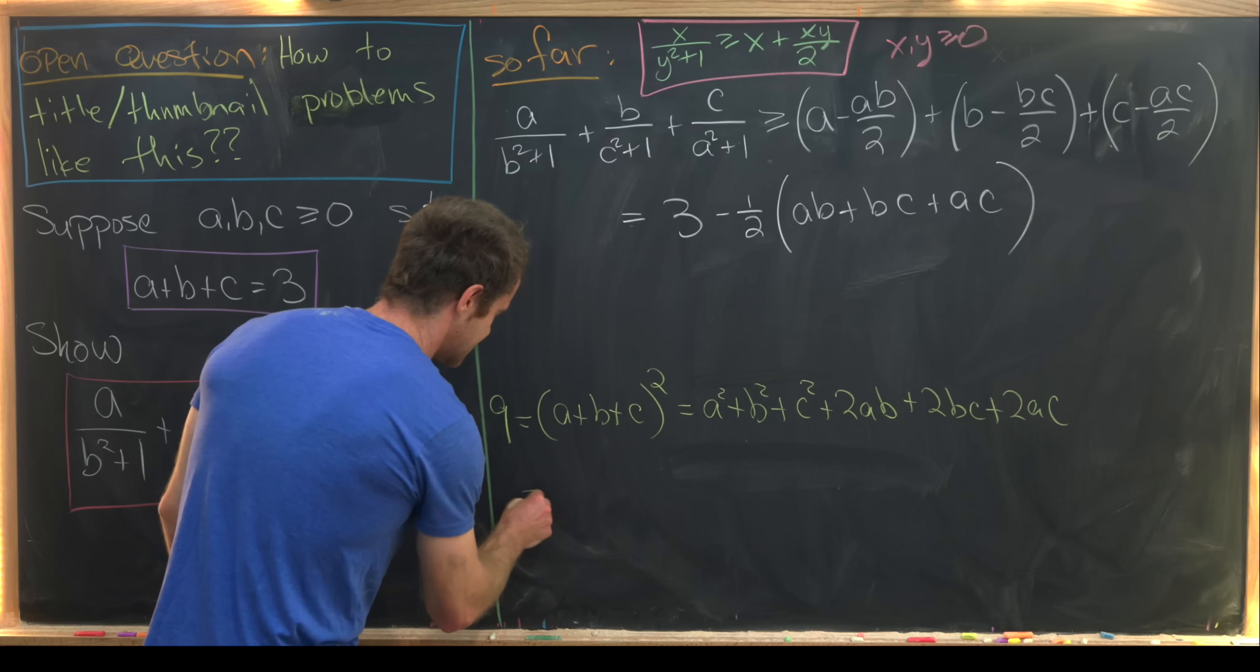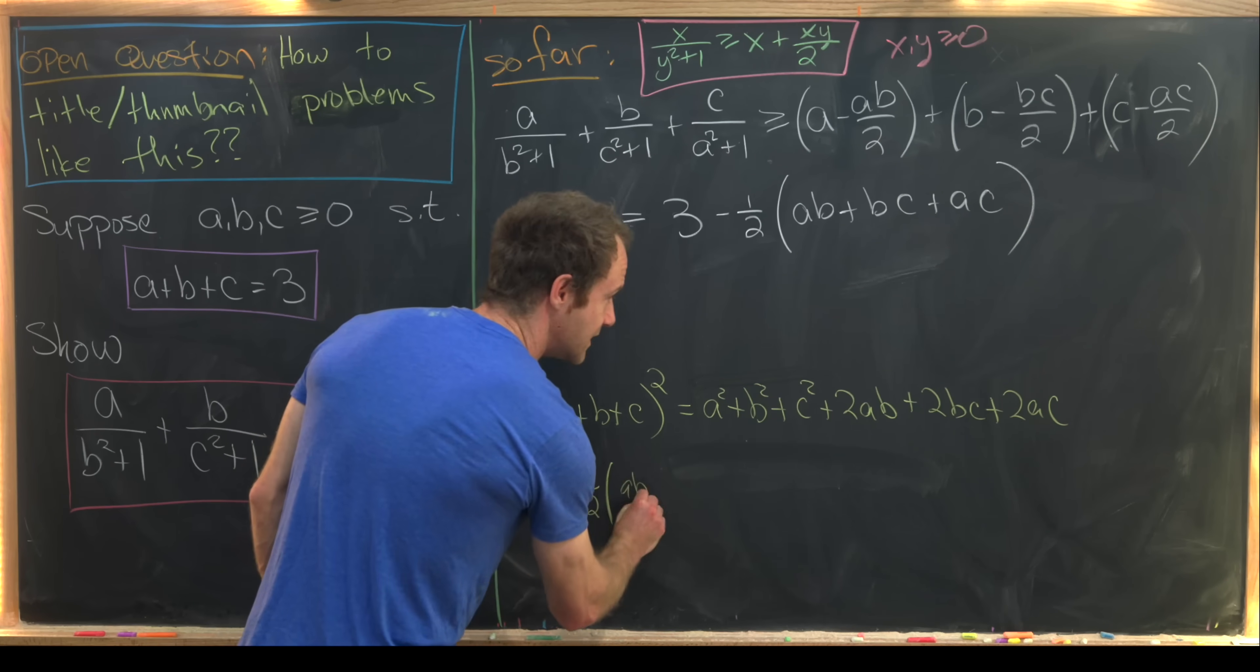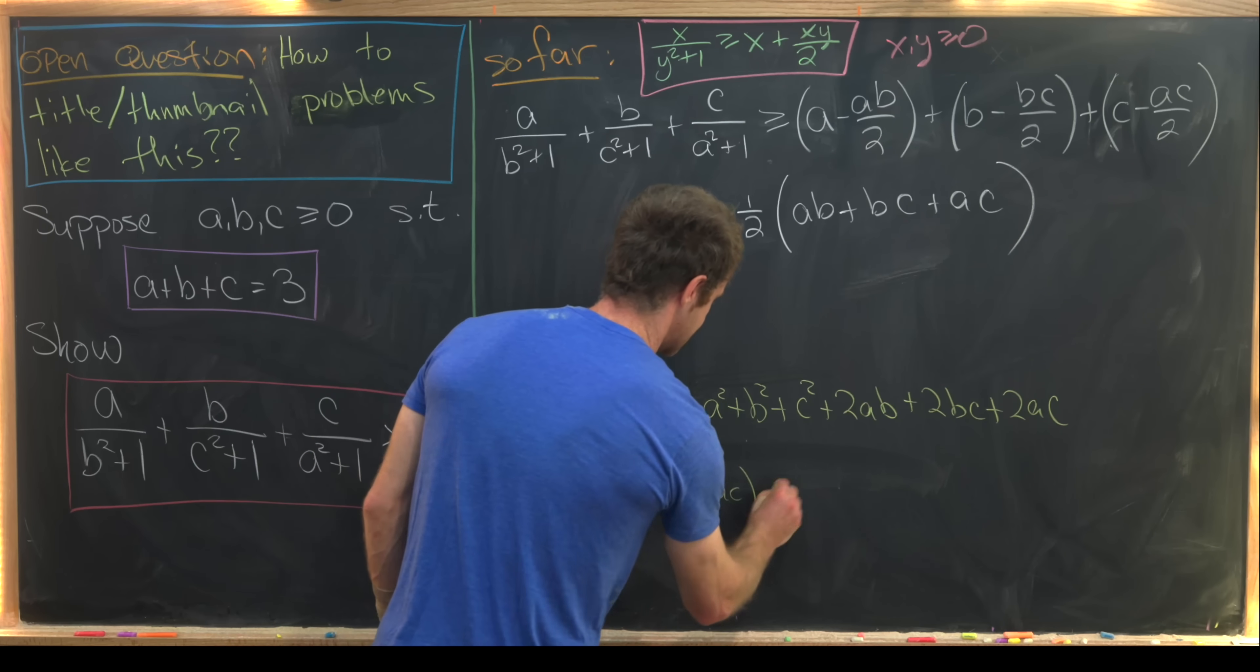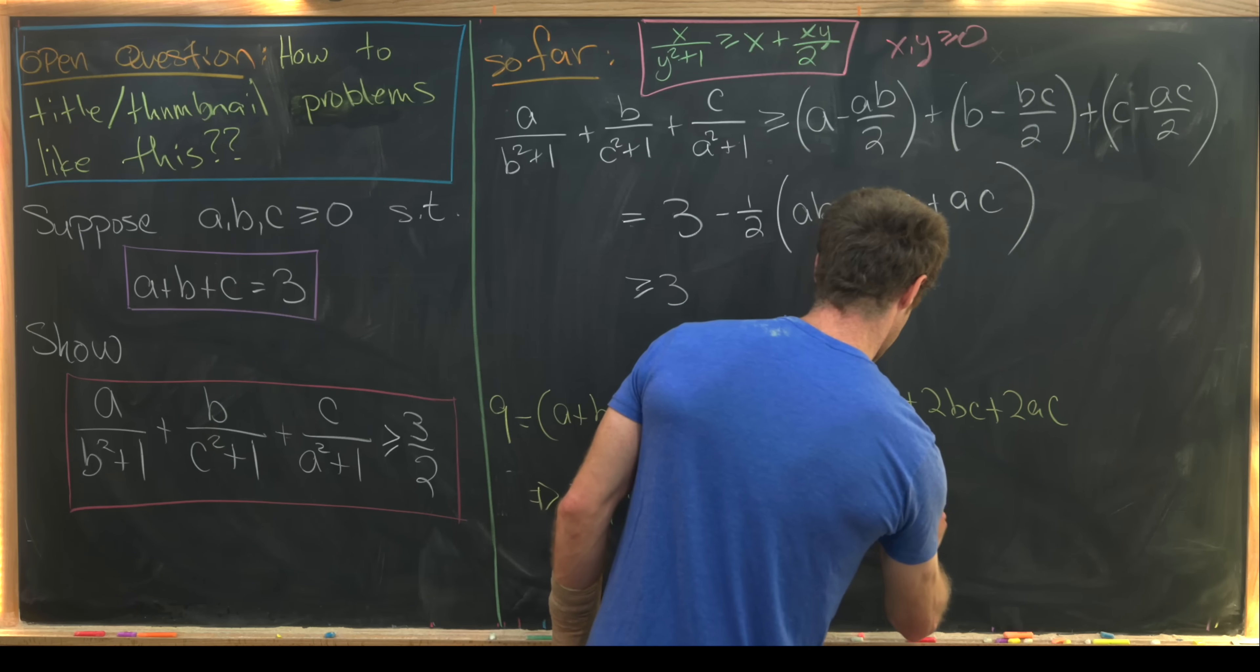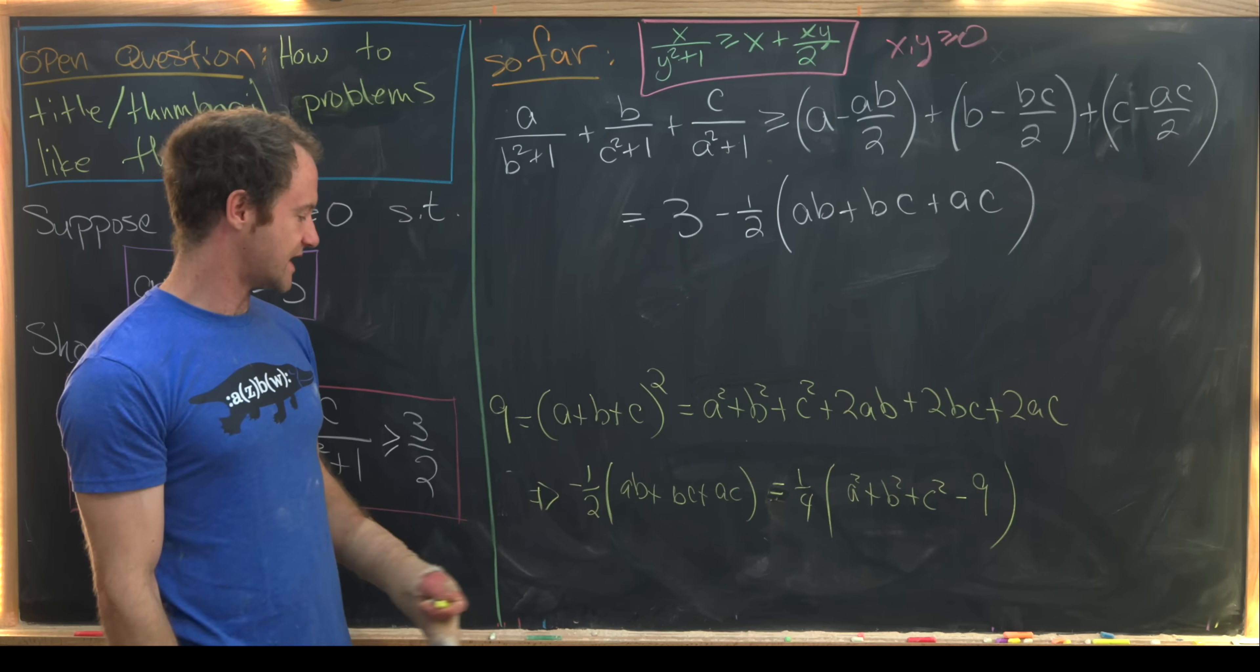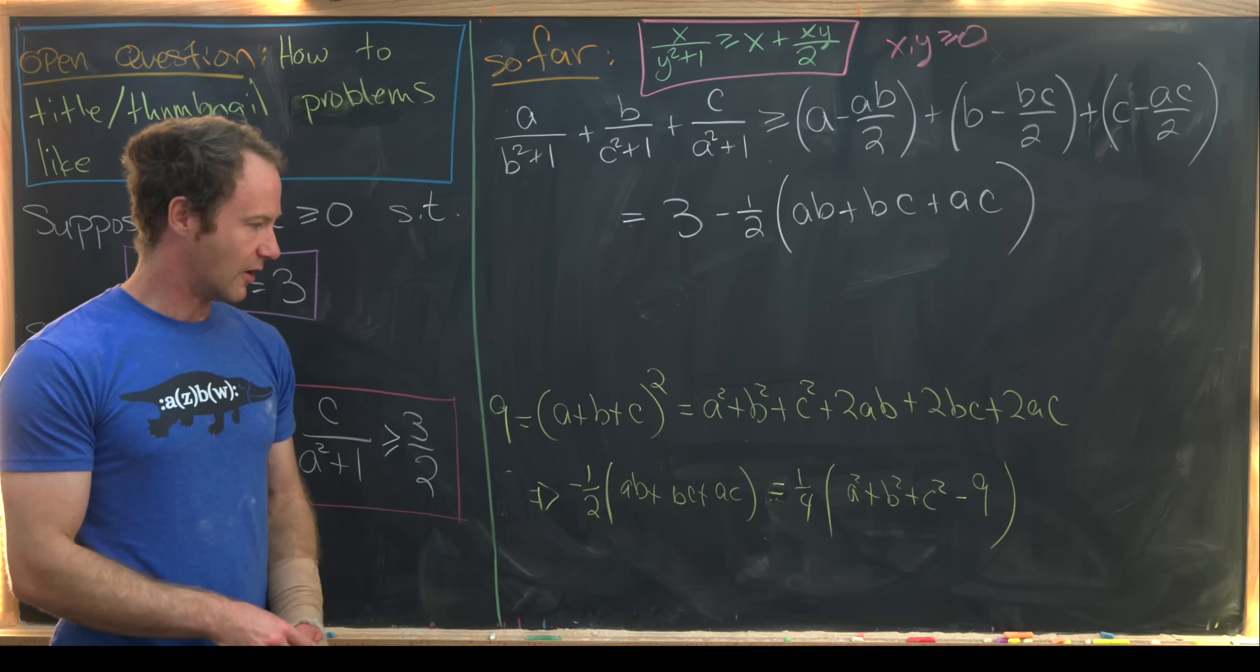So notice this tells us that minus 1 half ab plus bc plus ac equals 1 quarter, and then we have a squared plus b squared plus c squared minus 9. So we just rearrange this equation to solve for what's ending up right here.